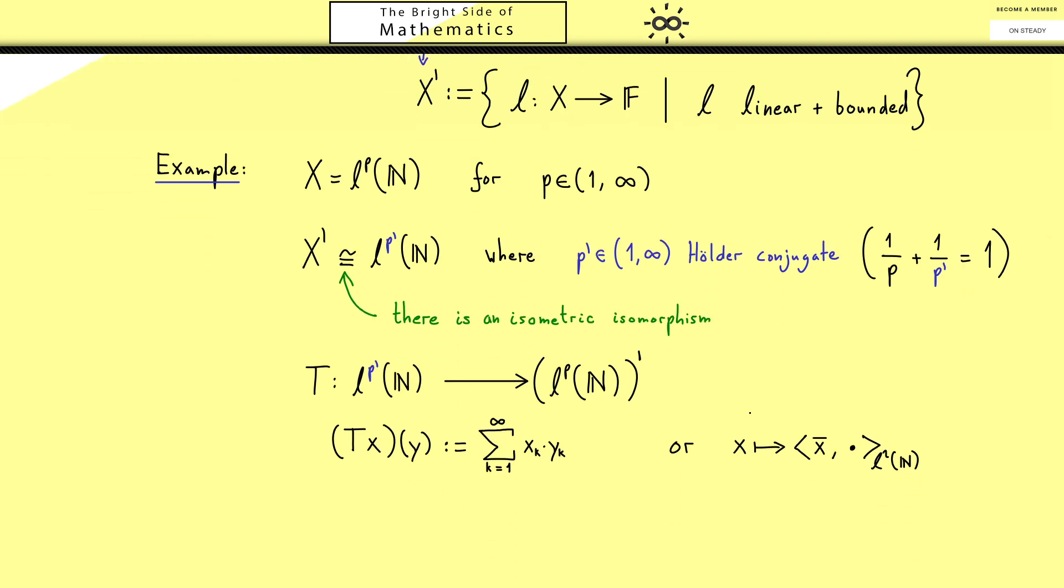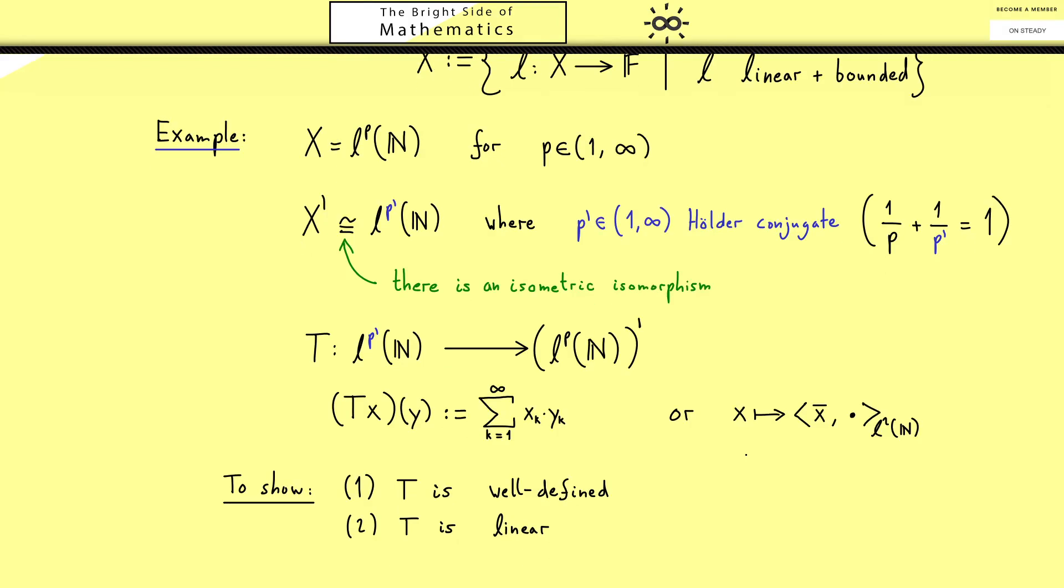I want to write down five properties we need to show. The first thing should always be that the definition we wrote down actually makes sense, in other words the map is well-defined. Then in the next step we check that the map is linear and also that it is continuous or bounded.